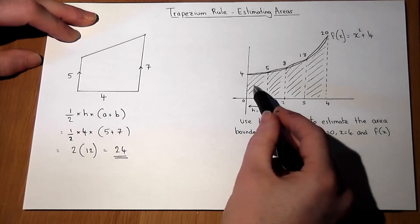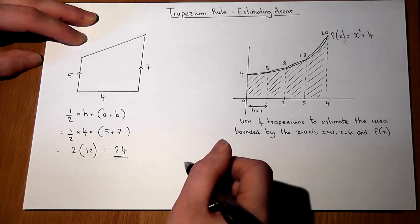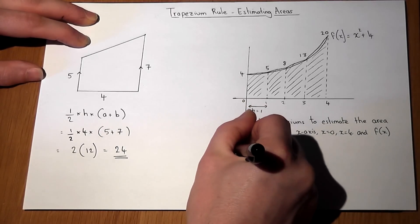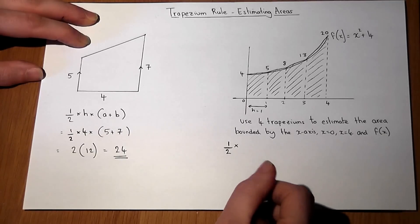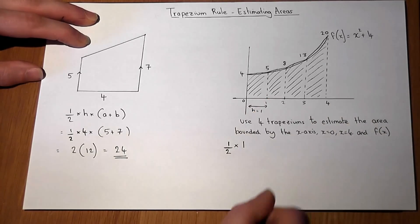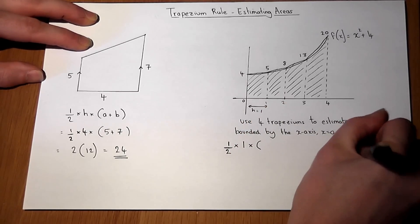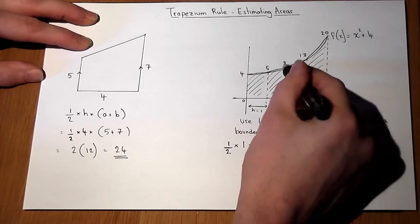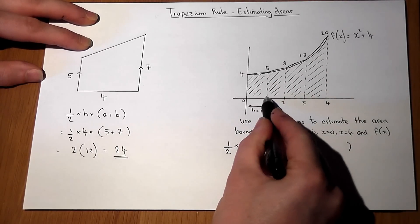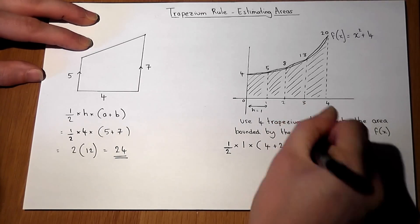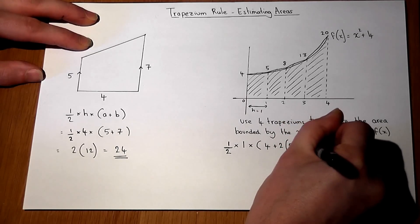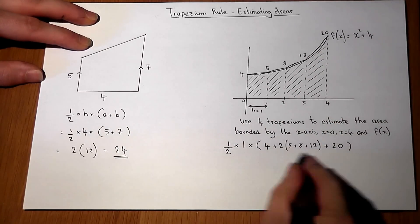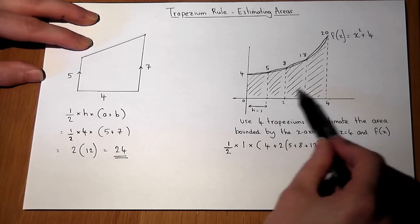I must now work out the four areas of the four trapeziums. However, there's a concise way to work out the total area. It is: a half times H — which in this case is 1 — multiplied by a bracket containing the first y-coordinate, plus two lots of the middle heights (5 plus 8 plus 13), plus the very last height. This concise expression evaluates all four trapeziums added together.